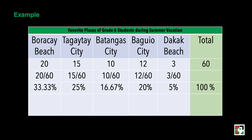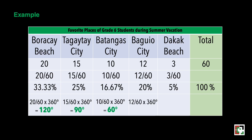To get the number of degrees in each sector: 20 over 60 times 360 degrees, or 33.33% of 360, equals 120 degrees. 15 over 60 times 360 degrees equals 90 degrees. 10 over 60 times 360 degrees equals 60 degrees. 12 over 60 times 360 degrees equals 72 degrees. 3 over 60 times 360 degrees equals 18 degrees. That gives a total of 360 degrees.